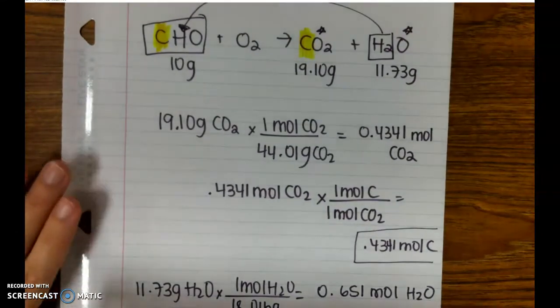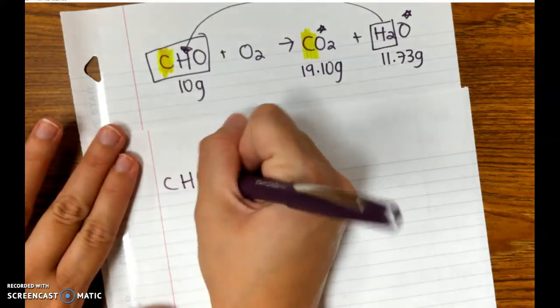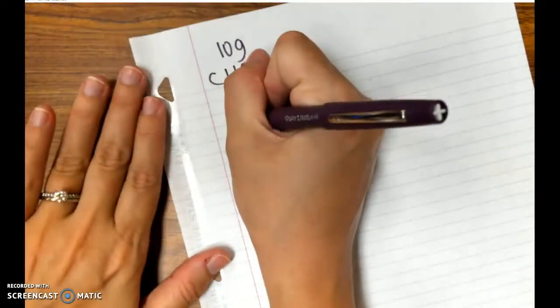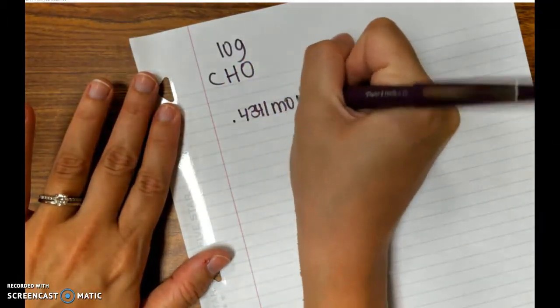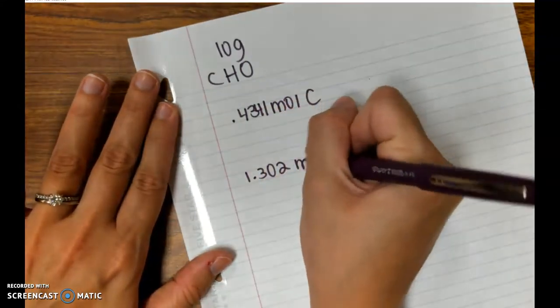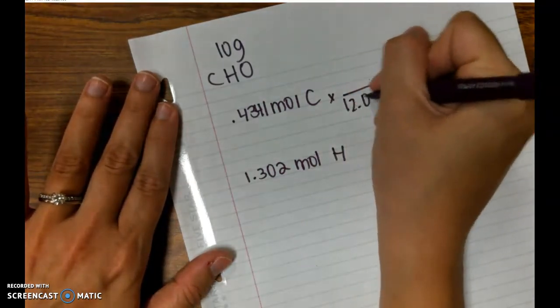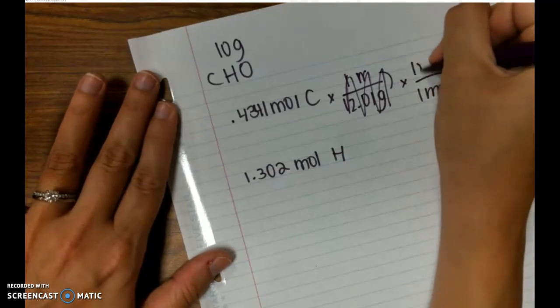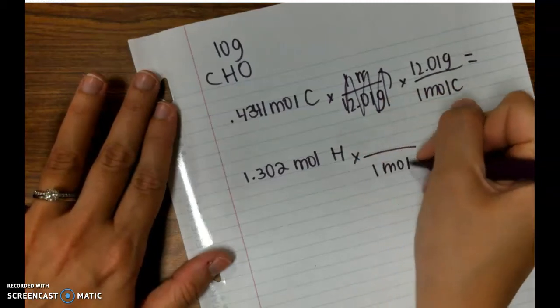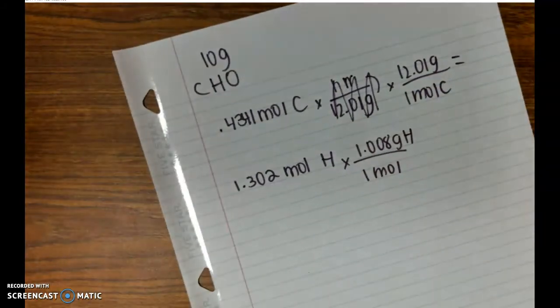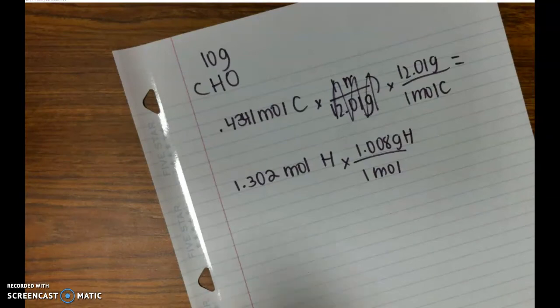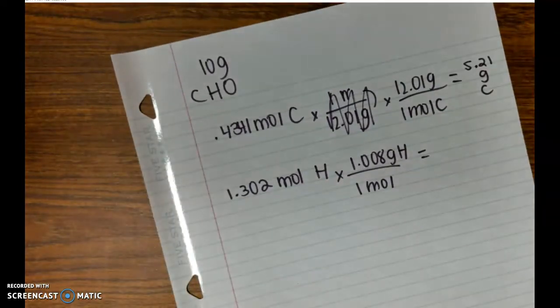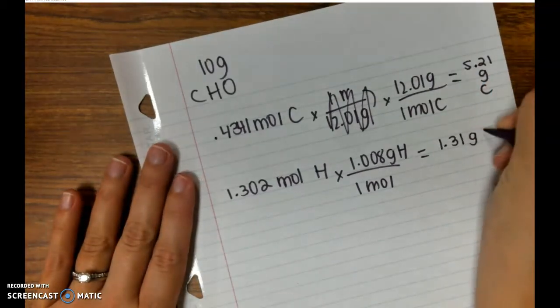But the problem did tell us that we had 10 grams of my CHO. And I know how many moles of C and how many moles of H that were in this. We can go from moles to grams. We're going to take our moles of carbon and our moles of hydrogen and change them to grams. That tells me 5.21 grams of carbon and 1.31 grams of hydrogen.